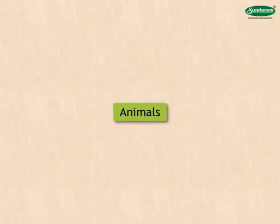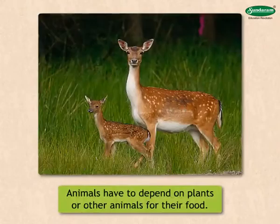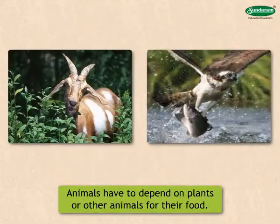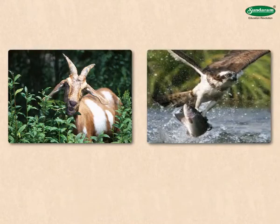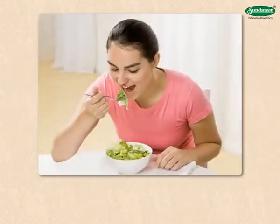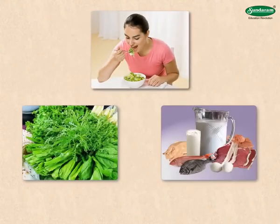Animals cannot prepare their own food. They have to depend on plants or other animals for their food. Hence, animals are known as heterotrophs. Man depends on plants and other animals for his food. Hence, man is also a heterotroph.